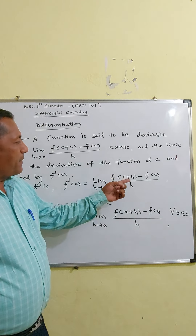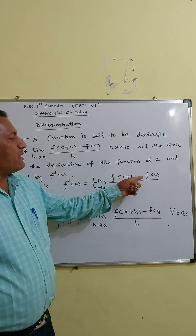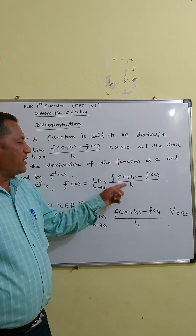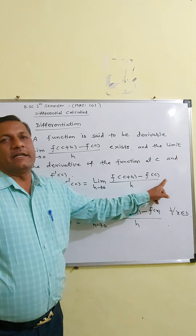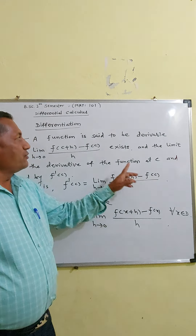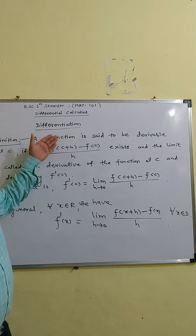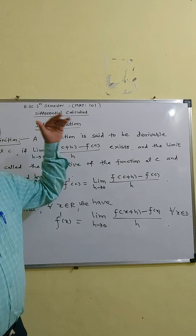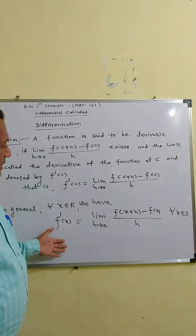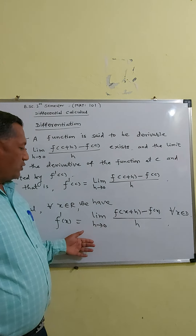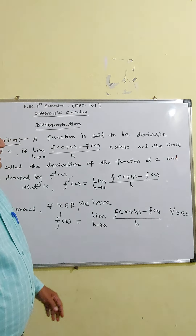We say the function is finitely derivable if the limit of [F(C + h) − F(C)] / h as h tends to 0 is finite. Now, using this first principle of derivative, we will see some examples.